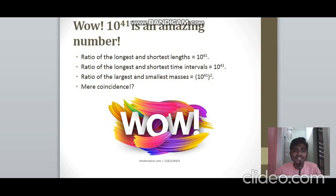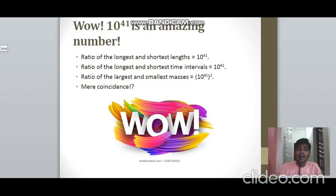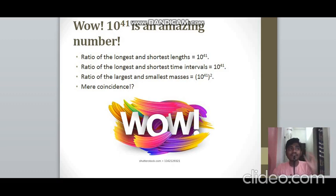An interesting coincidence: the ratio of the longest to shortest length that has been calculated is 10⁴¹, and the ratio of the longest to shortest time intervals is also 10⁴¹. However, the ratio of the largest to smallest masses is 10⁸² — the square of 10⁴¹. It is a remarkable coincidence that the length and time ratios are the same.